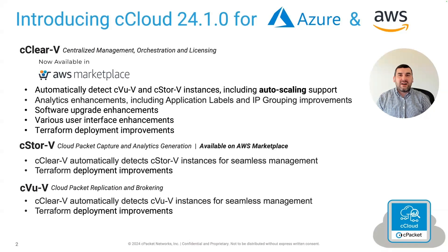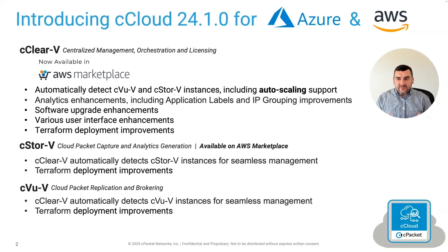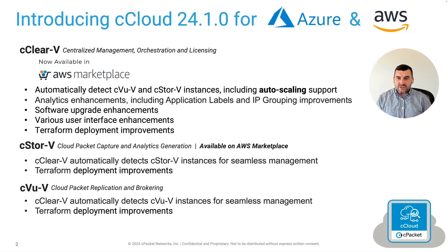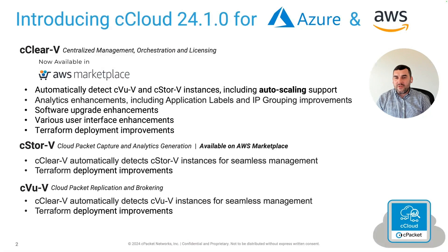Getting right into the release contents for 24.1.0 and beginning with our CClear V, which is our centralized management orchestration and licensing virtual appliance — it's very exciting to announce that we are now available in the AWS marketplace with our CClear V product. You can now easily obtain our latest images and deploy CClear V directly from the marketplace workflow in just a matter of minutes, which is really important for our customers. We're hoping to bring the same functionality to other products later this year, so stay tuned for more marketplace announcements from CPacket in the near future.